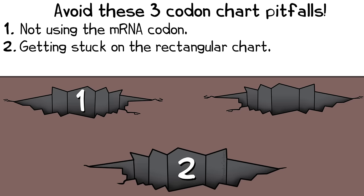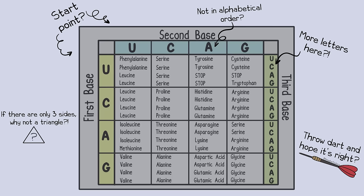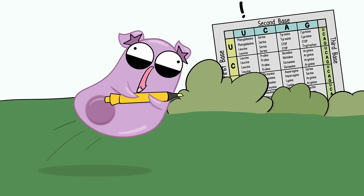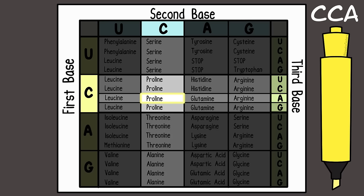Pitfall number two: getting stuck on the standard rectangular chart. Students tend to have more challenges with the rectangular one. We suggest going slowly, and even using a highlighter if you're able to. That way you can see where the first base isolates the row, the second base isolates the column, and the third base finishes in isolating the amino acid. Remember to go carefully in order.